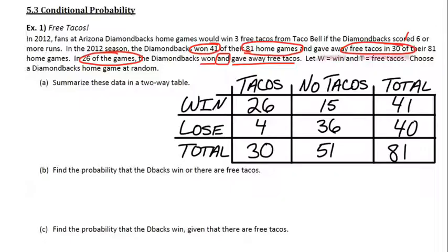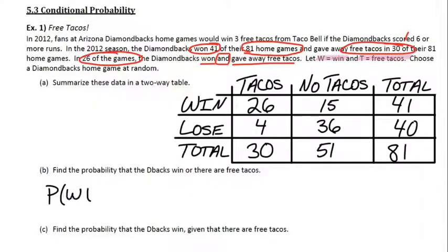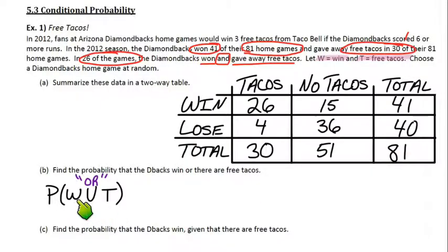We've got our two events already defined for us. W represents a win night. T represents a night where they give free tacos. Part B says find the probability that the Diamondbacks win or there are free tacos — so either or. The correct notation there is W union T — so either they win or there's free tacos.